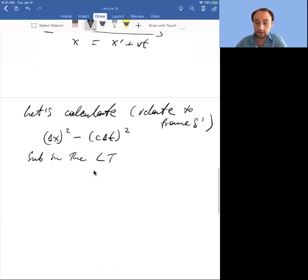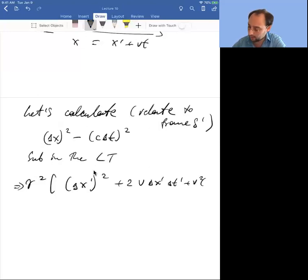Do it and you will see that you get the following: gamma squared times delta x prime squared plus 2v delta x prime delta t prime plus v squared delta t prime quantity squared, minus v squared over c squared delta x prime squared minus 2v delta x prime delta t prime minus c squared delta t prime quantity squared. This is a mess, but we realize that this term cancels this term.